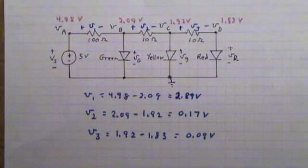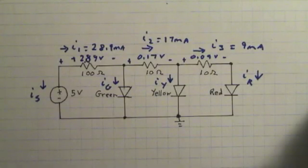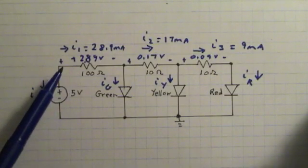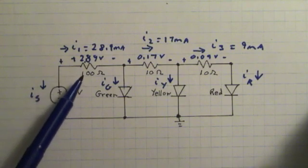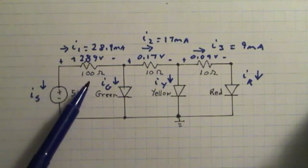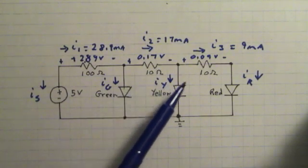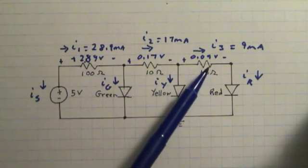Well now we've been able to deduce all seven element voltages from the node voltages. This begs the question though, what about the currents? Can we get those as well? Let's first of all turn to the resistors where we have Ohm's law at our disposal. If we know the voltage across the resistor, and we know the resistor value, of course we can get the resistor current. So by Ohm's law, I1 is equal to 2.89 volts divided by 100 ohms, or 28.9 milliamps, I2 is equal to 17 milliamps, and I3 is equal to 9 milliamps.